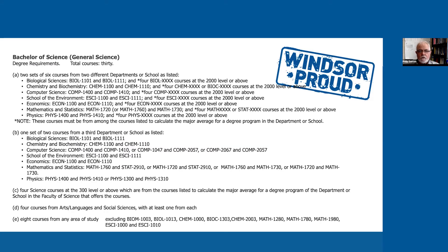So first of all, I want to show you the nasty stuff — this is the calendar entry for the General Science program, and some of you may also be in the concurrent General Science and Education. The calendar entry looks rather similar and indeed the requirements for the General Science part of the degree are identical. The calendar is the rules for how you get to your graduation, and I've got some pictures to show you that will help explain what all these words are.